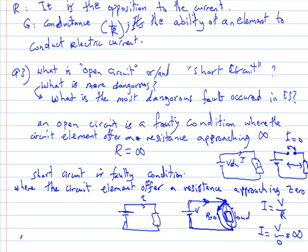So the answer for the second portion here: short circuit is the most dangerous fault in electrical system.